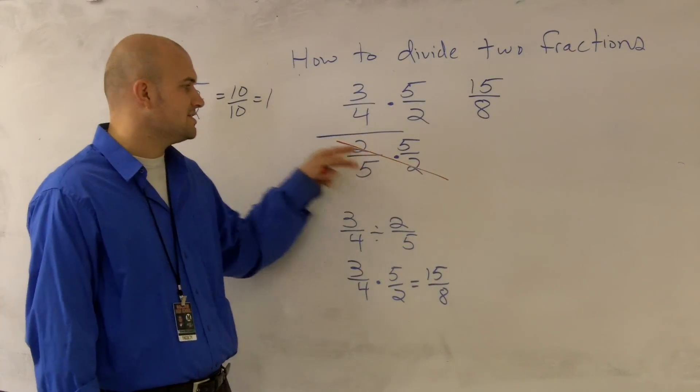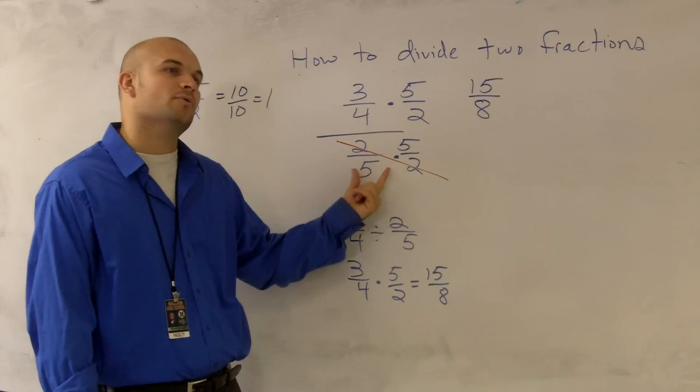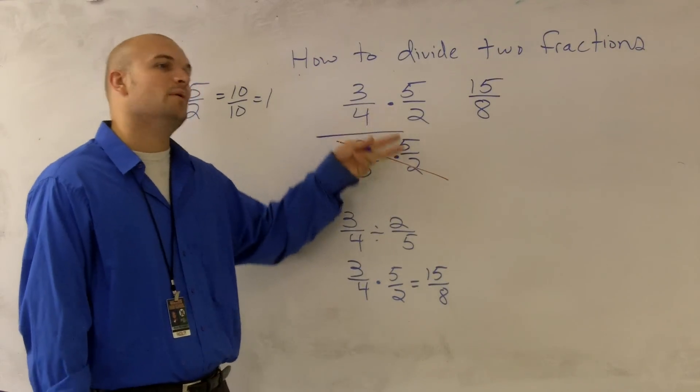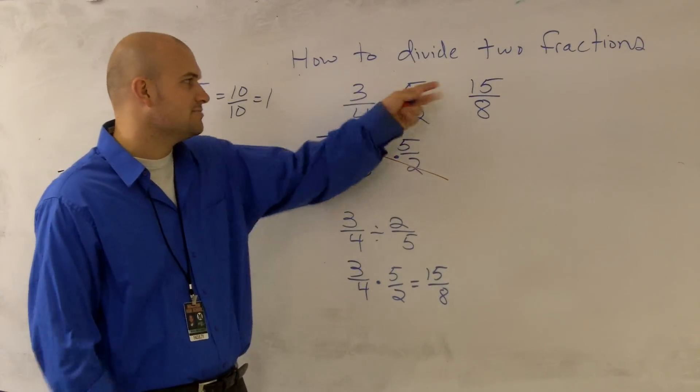The reason why we're flipping it is because we're multiplying by a reciprocal on the bottom to get rid of our fraction on the bottom. And whenever you multiply on the bottom, you have to multiply on the top and you just multiply across.